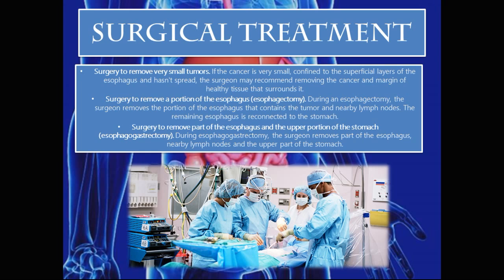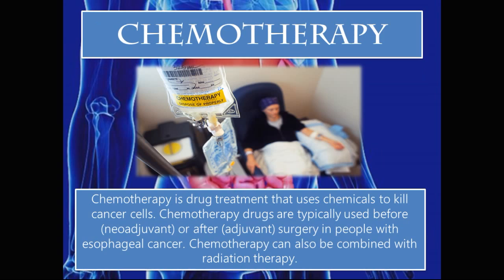Option 3 is esophagogastrectomy — surgery to remove part of the esophagus and the upper portion of the stomach. During an esophagogastrectomy, the surgeon removes part of the esophagus, nearby lymph nodes, and the upper portion of the stomach. Chemotherapy uses drugs to kill cancer cells and is typically used before surgery (neoadjuvant therapy) or after surgery (adjuvant therapy) in people with esophageal cancer. Chemotherapy can also be combined with radiation therapy.